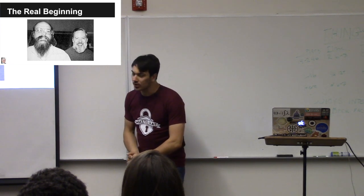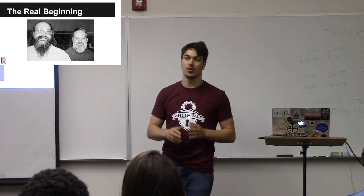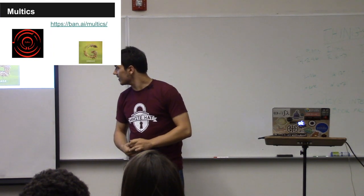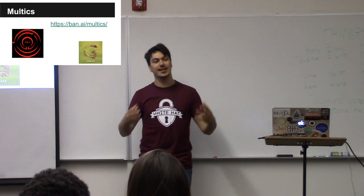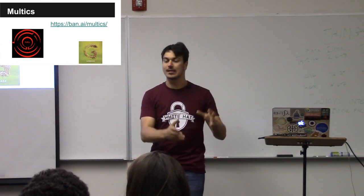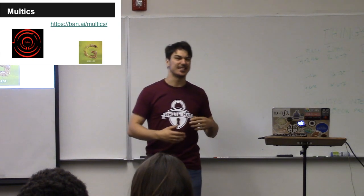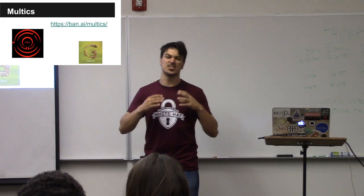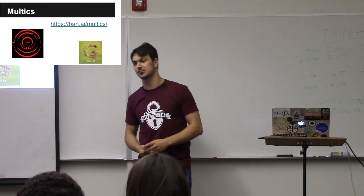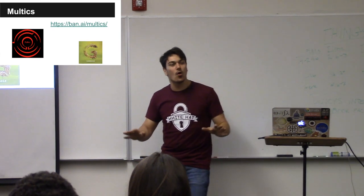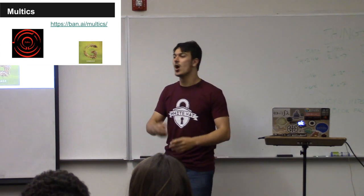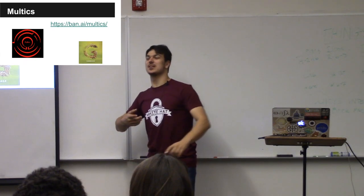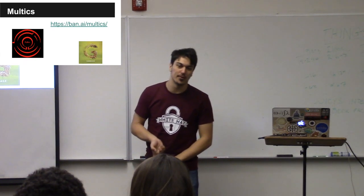These two guys were working on the Multics project. Multics is an operating system — a giant collaboration between Bell Labs, MIT, Caltech, and all these huge names. There was a ton of prestige around the Multics project. It was going to be the thing that solved current computing problems, made processing faster, cheaper, easier to use. It was going to put a computer terminal in every home.